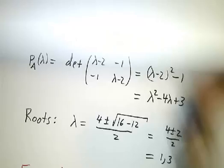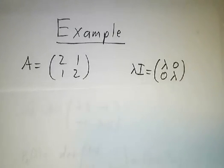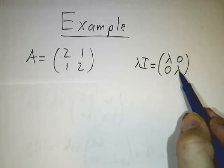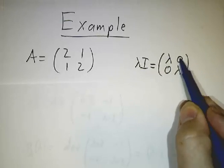So let's work an example. Our favorite matrix, the matrix 2, 1, 1, 2. And then the identity matrix is 1, 0, 0, 1. You multiply that by lambda, you get lambda, 0, 0, lambda.